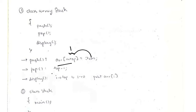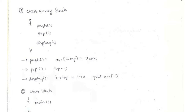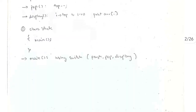For the push operation: array[++top] = item. For pop: top--. For display: loop from i = top down to i = 0 and print array[i] each time. In class Stack's main function we'll have switch statements: case 1 push, case 2 pop, case 3 display, and case 4 exit.